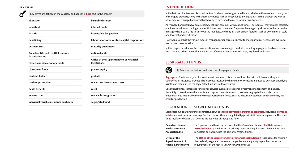Introduction. In the last five chapters, we discussed mutual funds and exchange-traded funds, which are the most common types of managed products, along with alternative funds such as hedge funds and liquid alts. In this chapter, we look at other types of managed products developed to meet specific investor needs. All managed products have some characteristics in common with mutual funds. They all pool capital to purchase securities according to a specific investment mandate, and are all managed by either an active or passive manager who is paid a fee to carry out the mandate. They all share certain features such as economies of scale and low cost of diversification.